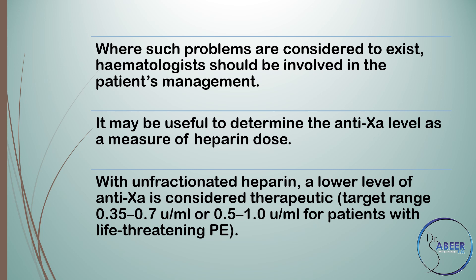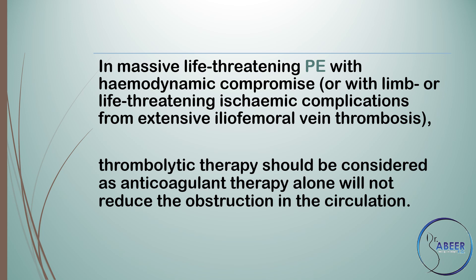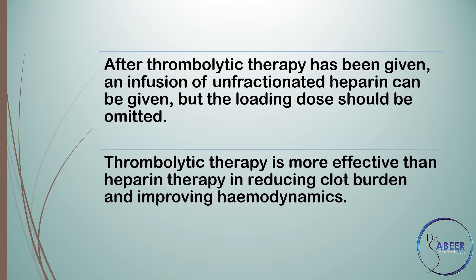With unfractionated heparin, the therapeutic anti-Xa target range is 0.35 to 0.7 units per ml, or 0.5 to 1.0 units per ml for patients with life-threatening pulmonary embolism. In massive life-threatening pulmonary embolism with hemodynamic compromise, or with limb- or life-threatening ischemic complications from extensive iliofemoral vein thrombosis, thrombolytic therapy should be considered, as anticoagulant therapy alone will not reduce the obstruction. Thrombolytic therapy is more effective than heparin therapy in reducing clot burden and improving hemodynamics.